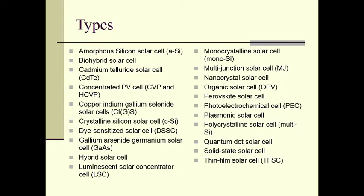There are various types of solar cells including: amorphous silicon (ASI), bio-hybrid, cadmium telluride (CdTe), concentrated PV cells, copper indium gallium selenide, crystalline silicon, dye-sensitized, gallium arsenide germanium, hybrid, luminescent solar concentrator, monochromatic, multi-junction, non-crystalline, organic, perovskite, photoelectrochemical, plasmonic, polycrystalline, quantum dot, solid-state, and thin-film solar cells.